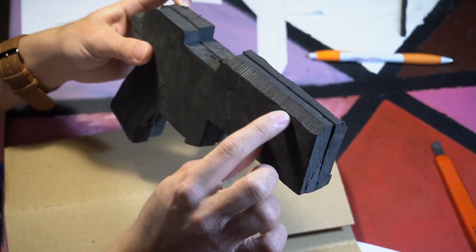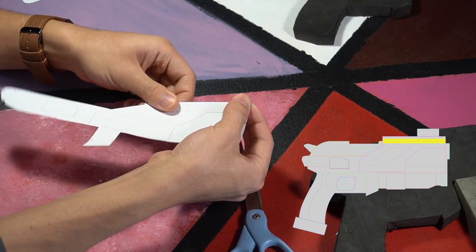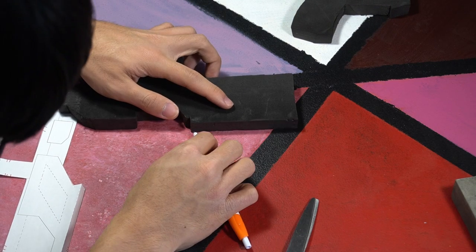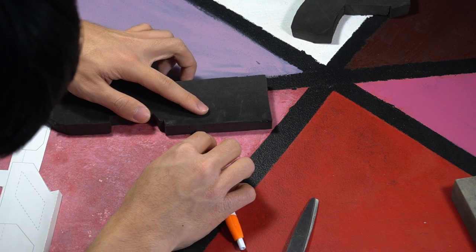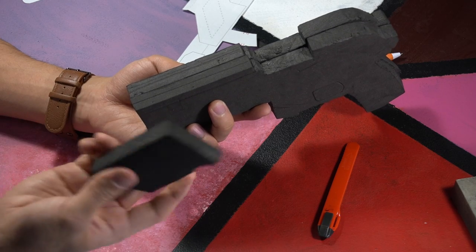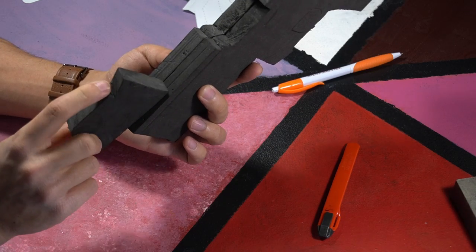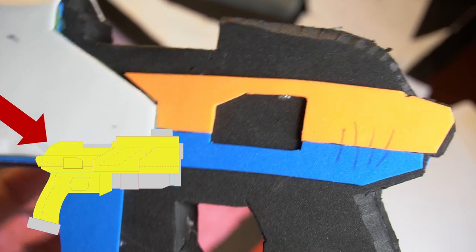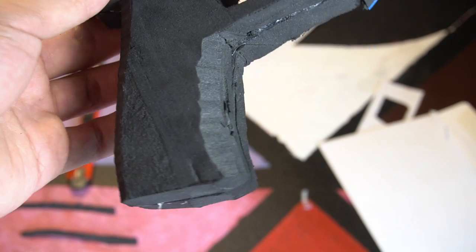Now we'll want to bevel the top of the gun. Fold the template on the dotted line here, then we'll trace that onto the foam. We'll also want to draw a line that's half the width of the foam. If you've done it correctly, then a piece of foam should fit between those two lines. We'll also want to bevel the handle and the back of the gun here. Then you can use a knife to cut the edge and dremel or sand it to make it smooth.